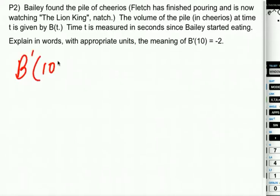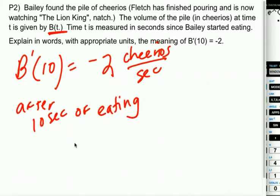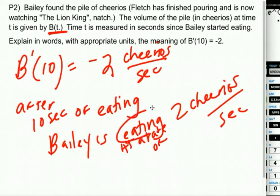So B'(10) is the volume of the pile in Cheerios changing with respect to time. So the volume of the pile is B, the rate at which that's changing is B'. So what this is saying in words is after 10 seconds of eating, Bailey is eating at a rate of two Cheerios per second. Now, why did we take away the negative? Well, because he's eating them at that rate. He's eating them, the pile's getting smaller by two Cheerios per second. The reason it's getting smaller by two Cheerios per second is because Bailey is eating them and they are in his belly, not in the pile. So that's the idea.